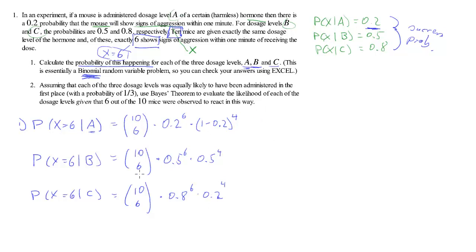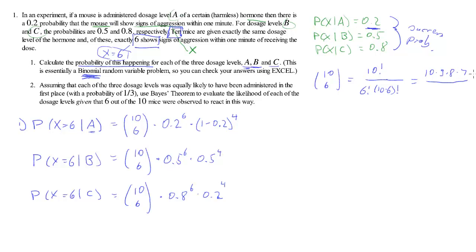We need the binomial coefficient 10 choose 6 in all of these, so let's calculate it once. 10 choose 6 is 10 factorial divided by 6 factorial times 4 factorial. That gives us 10 times 9 times 8 times 7 divided by 4 times 3 times 2 times 1, which equals 210. So there are 210 ways to get 6 successes out of 10 draws.